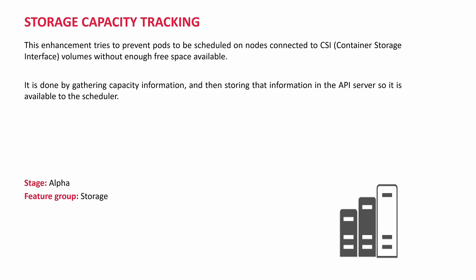Storage capacity tracking. This enhancement tries to prevent pods from being scheduled on nodes connected to Container Storage Interface (CSI) volumes without enough free space available. It keeps gathering capacity information on the volumes and storing it on the API server. If there is not enough storage for the pod to work, it tells the scheduler not to schedule the pod on that specific volume. Stage: alpha. Feature group: Storage.